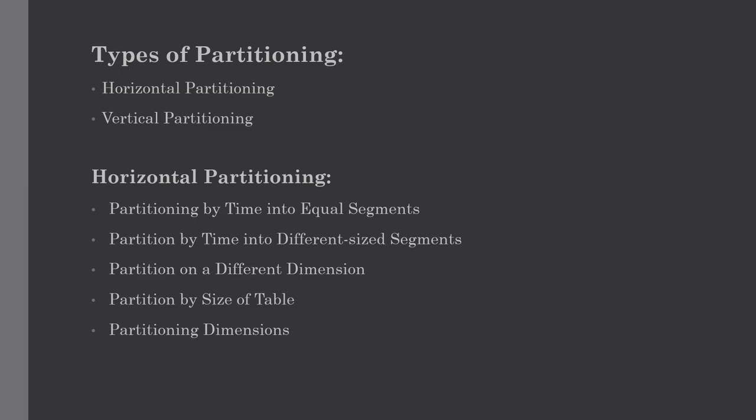The next type is partitioning by time into different size segments. This kind of partitioning is done where older data is accessed infrequently. It is implemented as a set of small partitions for relatively current data and larger partitions for inactive data. For example, current data will be partitioned on a monthly basis while historic data will be partitioned yearly instead of monthly, because historic data will not be accessed frequently.